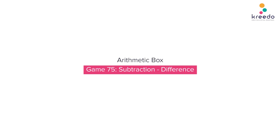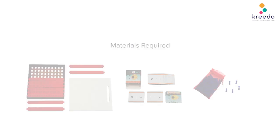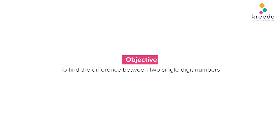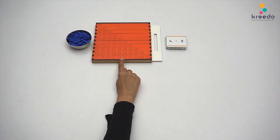Arithmetic Box Game 75: Subtraction Difference. Materials Required: Arithmetic Box, Subtraction Cards, Skittles, Bound. Objective: To find the difference between two single-digit numbers. Procedure: Keep the arithmetic box,